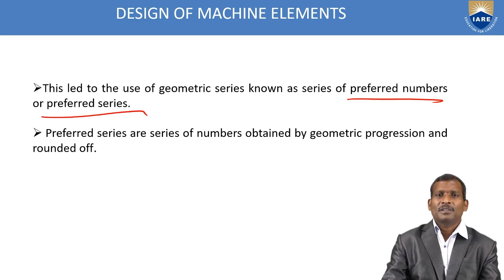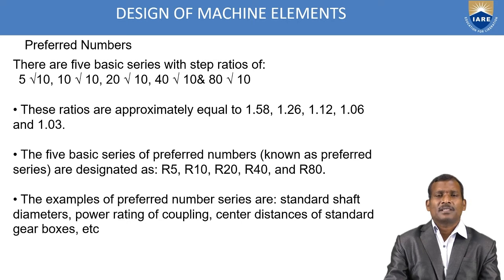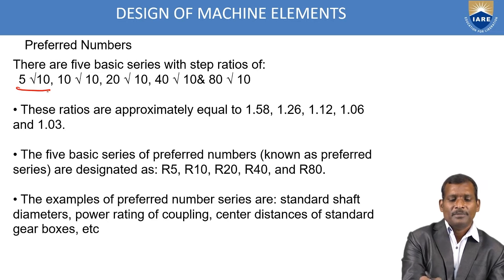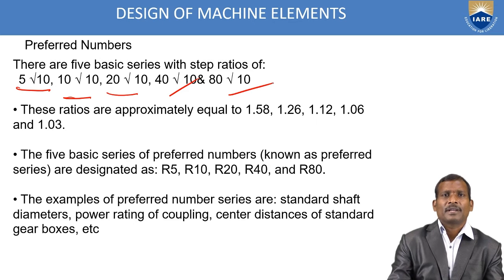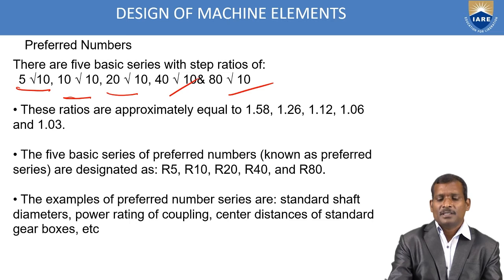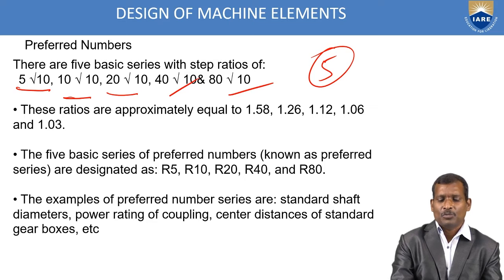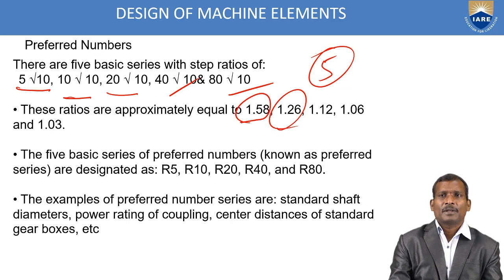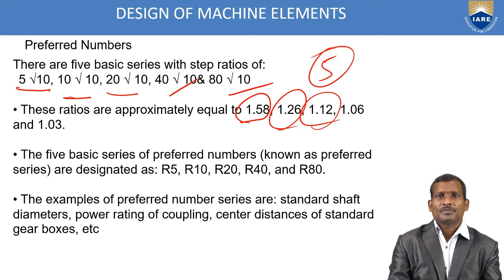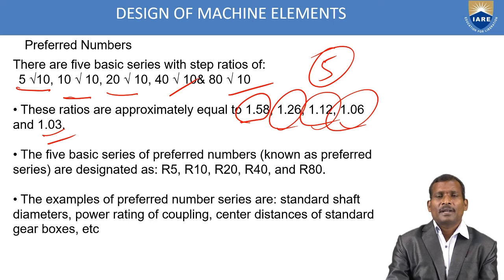What are the preferred numbers? There are five basic series with step ratios of 5th root of 10, 10th root of 10, 20th root of 10, 40th root of 10, and 80th root of 10. These ratios are approximately equal to: 5th root of 10 ≈ 1.58, 10th root of 10 ≈ 1.26, 20th root of 10 ≈ 1.12, 40th root of 10 ≈ 1.06, and 80th root of 10 ≈ 1.03.